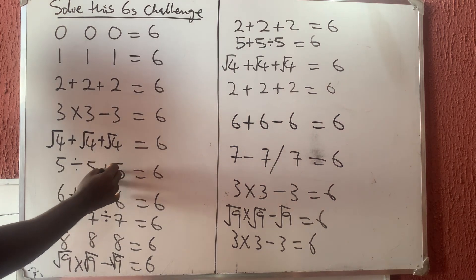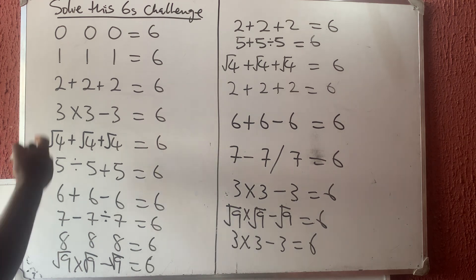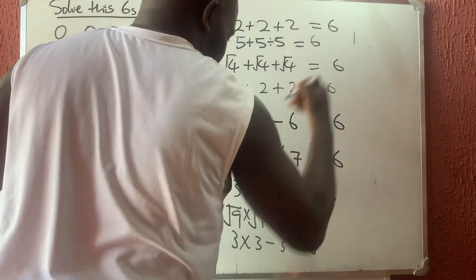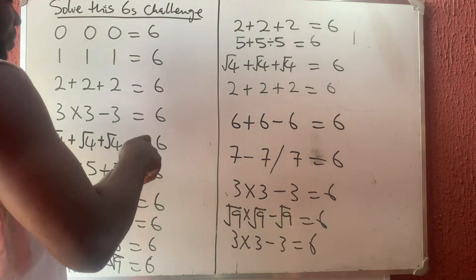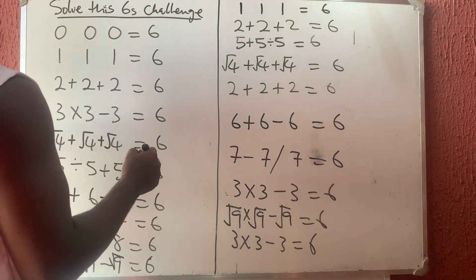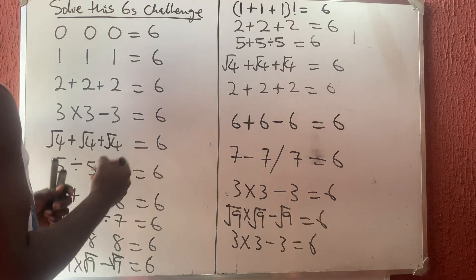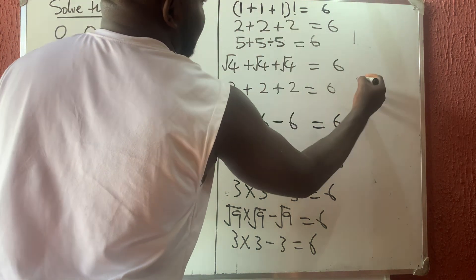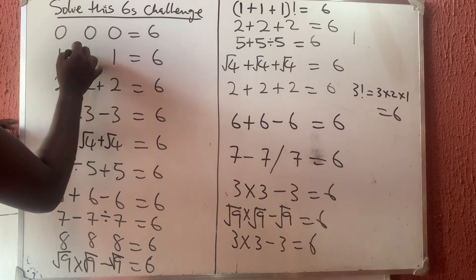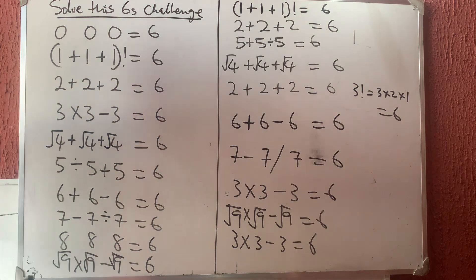Now let's do one, one, one. What if I say (one plus one plus one) factorial? One plus one is two, two plus one is three, and three factorial means three times two times one, which equals six. So the operation is: (one plus one plus one)! — plus, plus, all in brackets, then factorial.